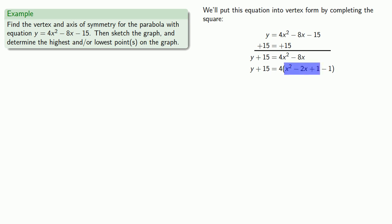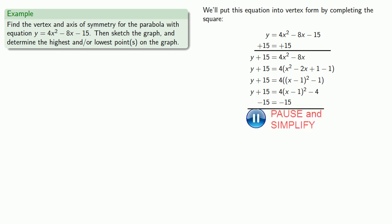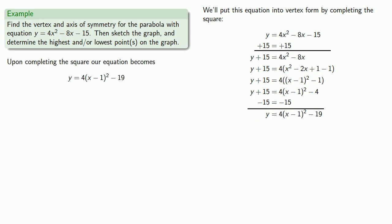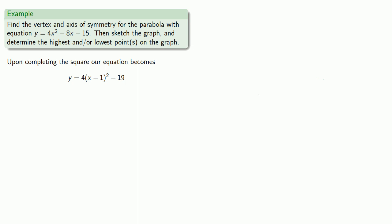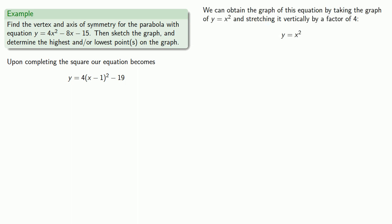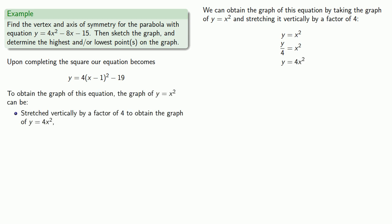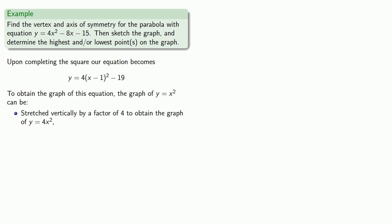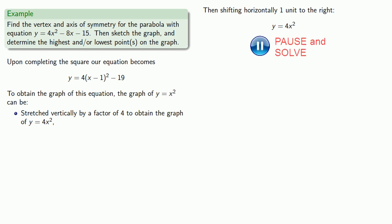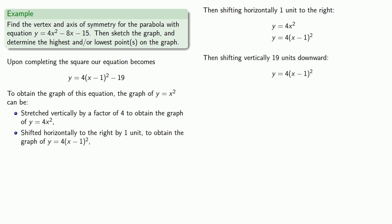The first three terms inside the parentheses form a perfect square, so we write it that way. We expand slightly, and since we started with an equation of the form y equals, we subtract 15 to get our vertex form of the equation. We can obtain the graph by taking y equals x squared, stretching vertically by a factor of 4, then shifting horizontally to the right, and then shifting vertically downward by 19 units.